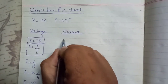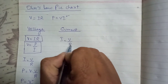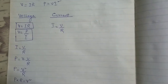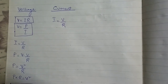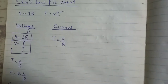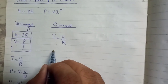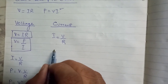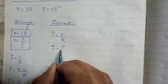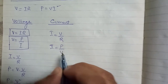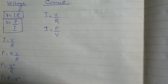The first formula for current is I is equal to V upon R. You can make the second formula of current from the formula of power, P is equal to VI, so it becomes I is equal to P upon V — power divided by voltage.